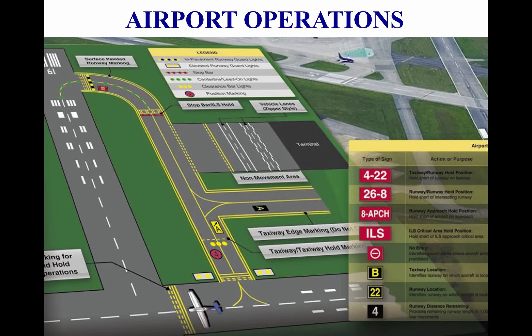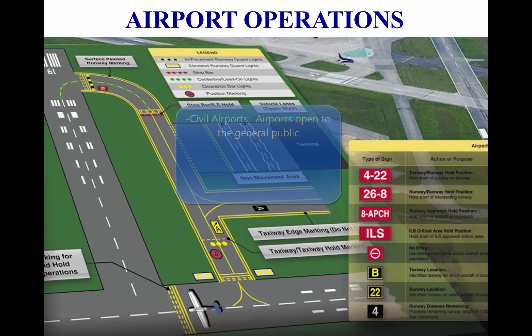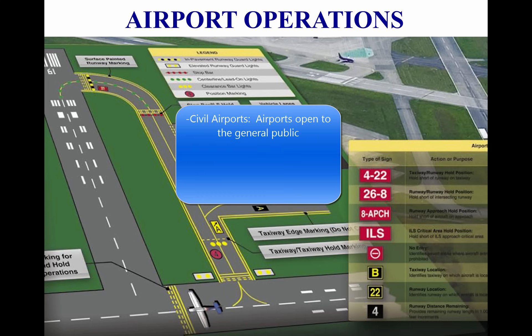There are two types of airports: towered and non-towered. These types can be further subdivided into civil airports, which are open to the general public, and military or federal government airports, which are airports operated by the military, NASA, or other agents of the federal government.